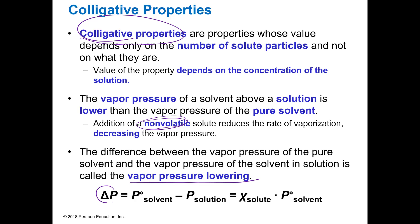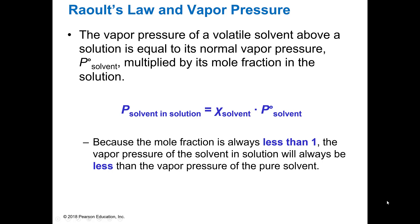The change in vapor pressure is the vapor pressure of the solvent minus the vapor pressure of the solution. Another way of calculating that is the mole fraction of the solute times the vapor pressure of the original solvent — which comes in handy if you don't know the vapor pressure of the solution. Because the mole fraction cannot be more than one, the vapor pressure of the solvent is always going to be less than the vapor pressure of the pure solvent, which is what we're trying to achieve.